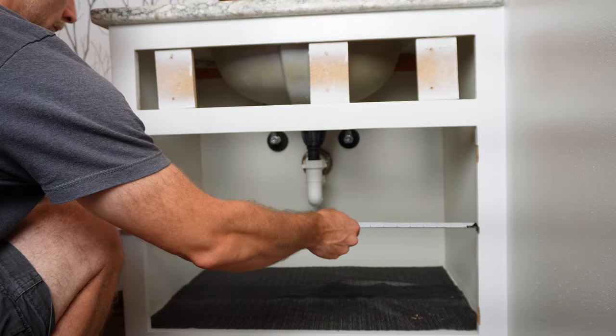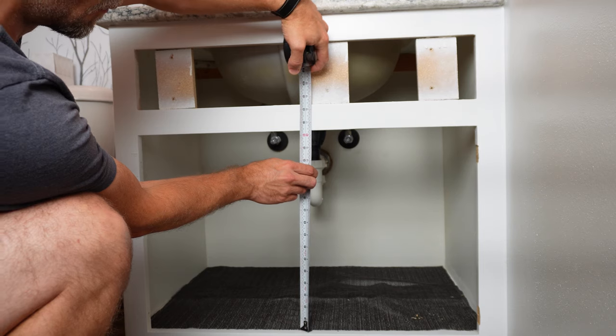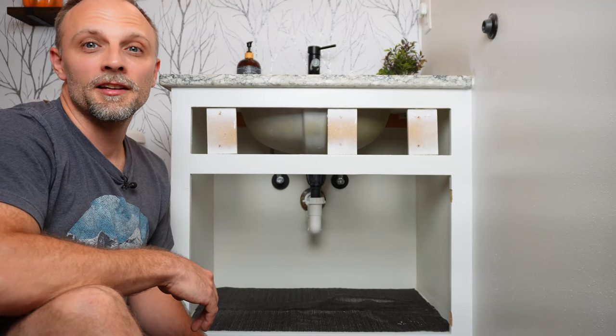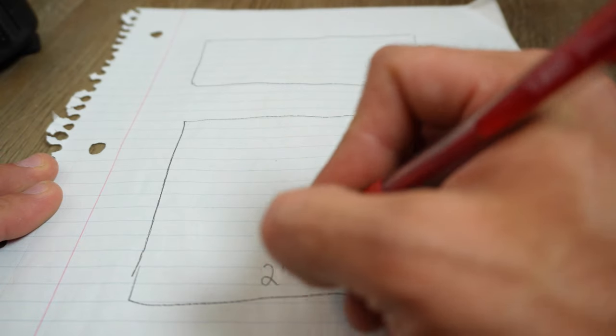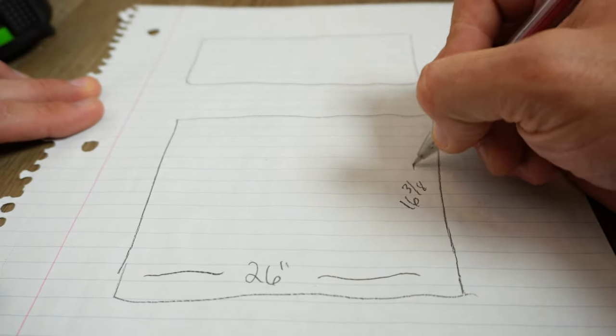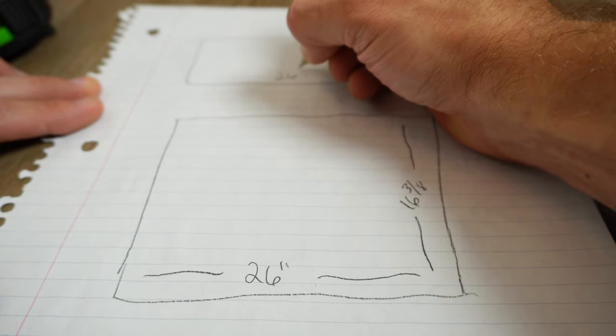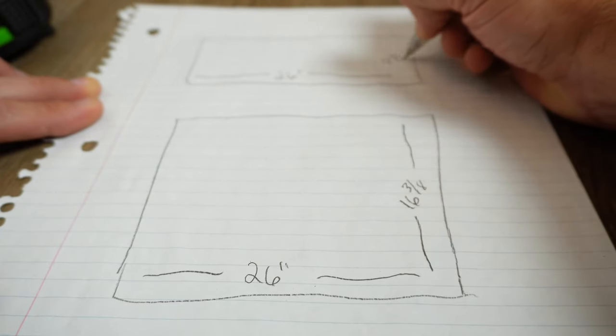First, measure the width and height of each opening. And write those measurements down in the openings that you drew on the sheet of paper. For this vanity, the width of the door opening is 26 inches, and the height is 16 and 3/8 of an inch. The false drawer opening measures out at 26 inches wide by 4 and 7/8 inches high.